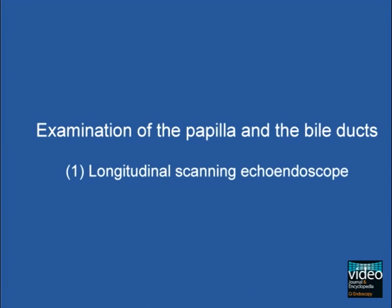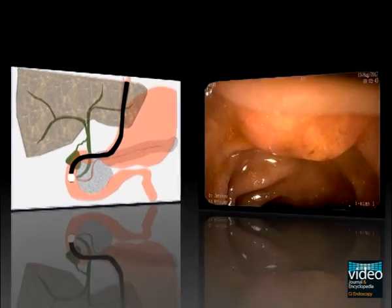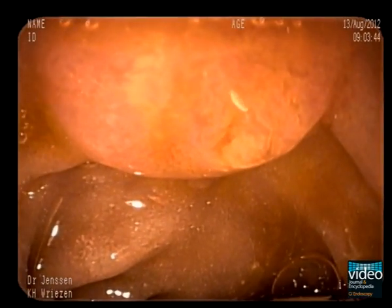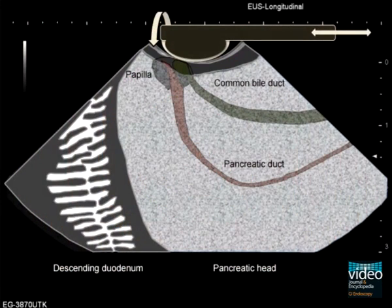Longitudinal EUS of the biliary tract starts in the second part of the duodenum. Having straightened the echoendoscope as usual in endoscopic retrograde cholangiopancreatography (ERCP), close contact is established between the transducer and the papilla. The scope is withdrawn very slowly until the hypoechoic triangular papilla is visualized. In most cases, the pancreatic duct will appear first.